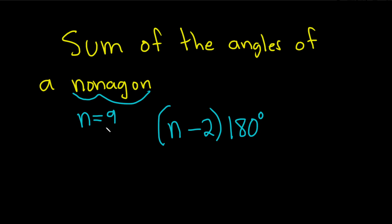So all we have to do is take the 9 and plug it into this formula. So we'll get 9 minus 2 times 180 degrees. So 9 minus 2 is 7, so we have 7 times 180 degrees.